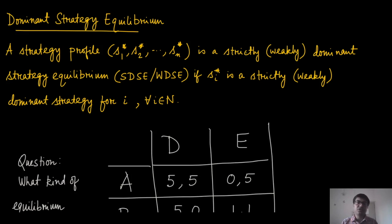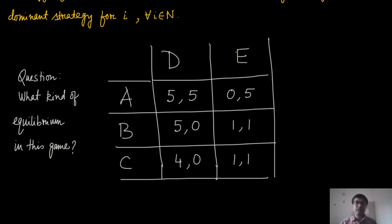From dominant strategies we can define an equilibrium. A strategy profile (s1*, s2*, …, sn*) is called a strictly or weakly dominant strategy equilibrium — abbreviated SDSE or WDSE — if s_i* is a strictly or weakly dominant strategy for all players i in N.